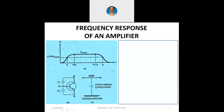At higher frequencies, the gain reduction is due to internal device capacitances. The transistor has its own junction capacitances — between base and collector there is a junction with a depletion region, and between base and emitter there is another junction with a depletion region. That depletion region acts as a capacitance. Depletion means the region is depleted of charge carriers. Because of recombination of charge carriers, that area becomes neutralized, similar to the insulating dielectric between two capacitor plates.